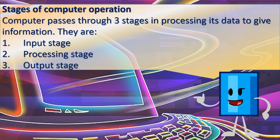Stages of Computer Operation. A computer passes through three stages in processing its data to give information. They are: 1. Input Stage, 2. Processing Stage, 3. Output Stage.